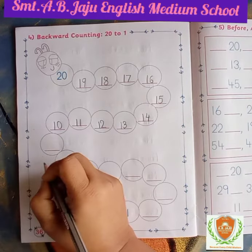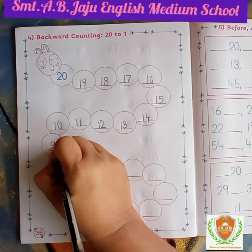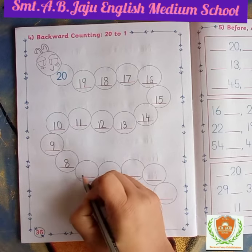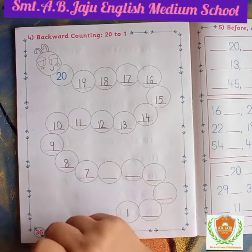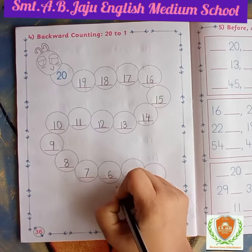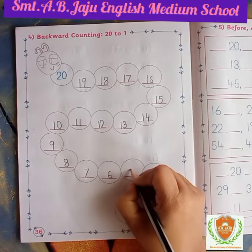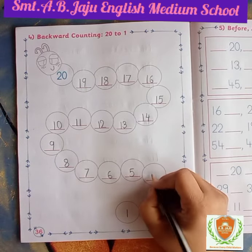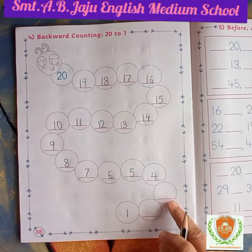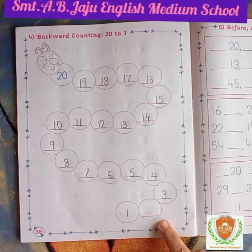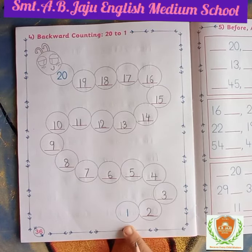After 10, which number will become? 9. After 9, which number will become? 8. After 8, which number will become? 7. After 7, which number will become? 6. After 6, which number will become? 5. After 5, which number will become in backward? 4. After 4, which number will become in backward? 3. After 3, which number will become in backward? 2. After 2, which number is this? This is number 1. Like this you have to write down.